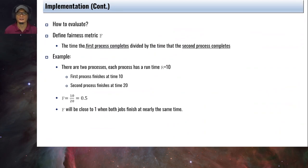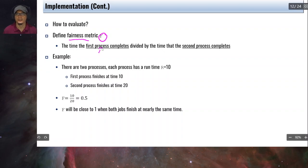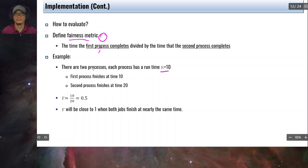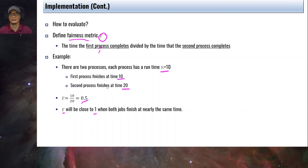How do we evaluate the performance of lottery scheduling? We define a fairness metric F as the time the first process completes divided by the time the second process completes. For example, if two processes each have a runtime of 10 and the first finishes at time 10 while the second finishes at time 20, then F = 10/20 = 0.5. F will be close to 1 when both jobs finish at nearly the same time.